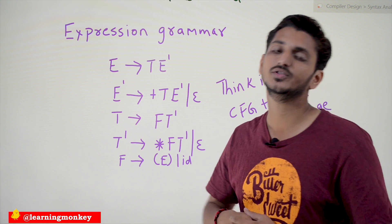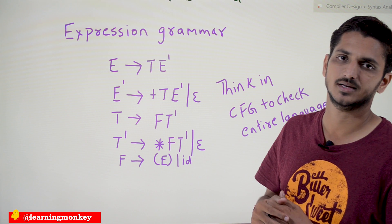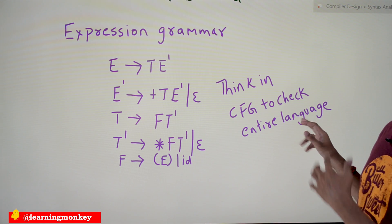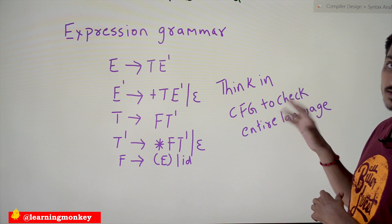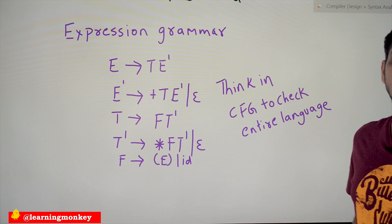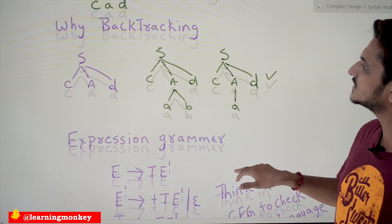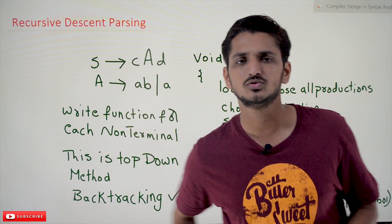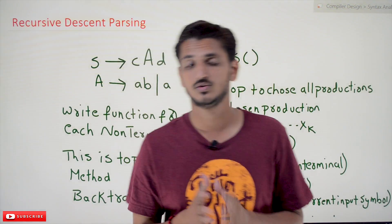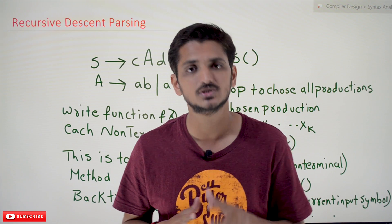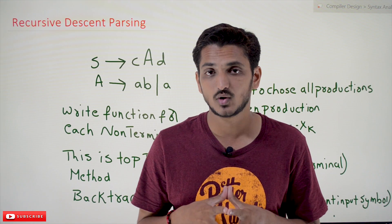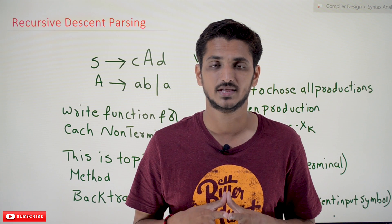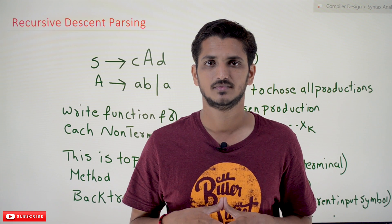These are the problems with recursive descent parsing. To check an entire language, the context-free grammar is enormous, making this backtracking approach impractical. That is what recursive descent parsing is about. If you have questions, post them in the comments below. Thanks for watching — please subscribe to our channel and press the bell icon for the latest updates.